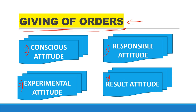The first is a conscious attitude, that is to know the different principles underlying giving orders. Second is a responsible attitude, that is to identify those principles which should become the basis of giving orders. Third is an experimental attitude, that is to make experiments to analyze the success or failure of orders. And fourth is a result attitude, that is to pull the results of change to the extent and manner of giving of orders if the existing methods are found insufficient.